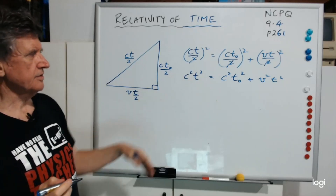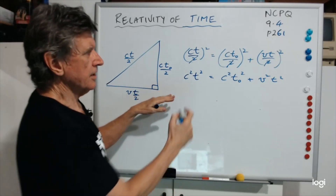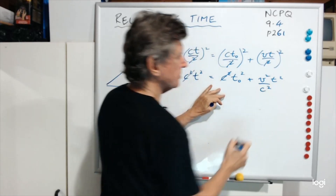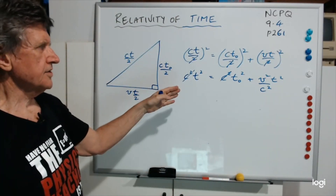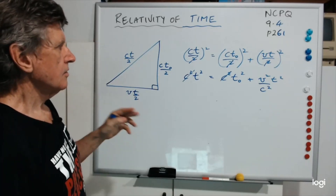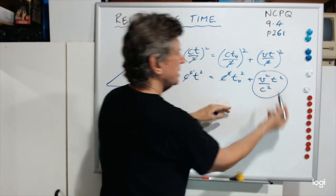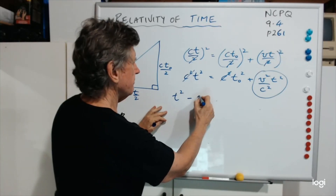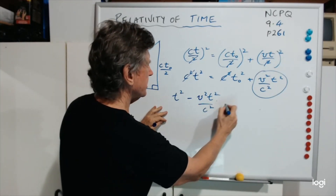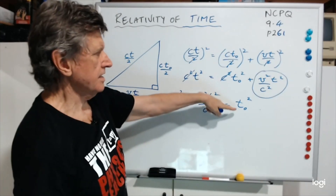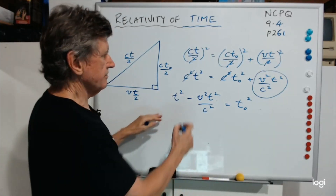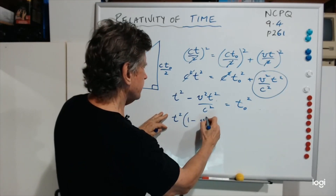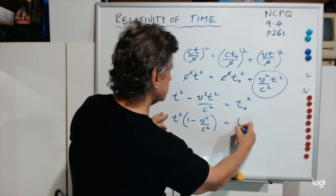Now I'm going to divide through by C², giving T² = T0² + V²T²/C². Rearranging — bringing the V²T²/C² term over to the other side to make it negative: T² - V²T²/C² = T0². Now I'll take the common factor T² out: T²(1 - V²/C²) = T0².